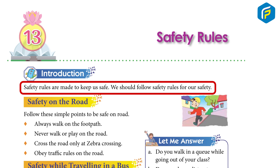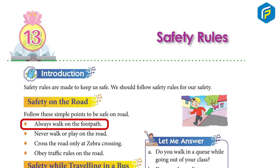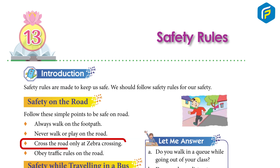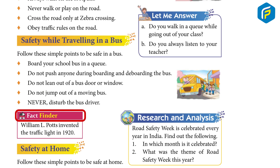Safety on the road: Follow these simple points to be safe on the road. Always walk on the footpath. Never walk or play on the road. Cross the road only at the zebra crossing. Obey traffic rules on the road. Fact finder: William Potts invented the traffic light in 1920.